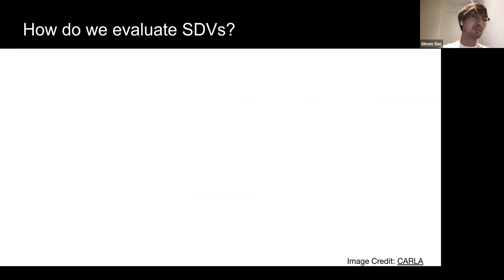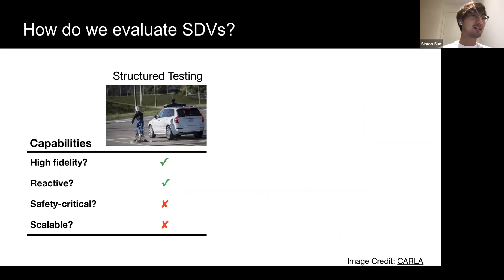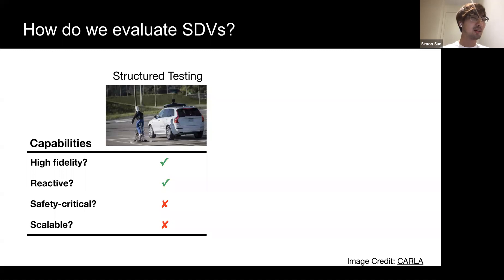The self-driving industry has used a combination of three different approaches to evaluate self-driving vehicles. First, there's structured testing, which tests the SDV on a set of reproducible scenarios. This is typically done at a test track facility and is considered high-fidelity, since we can evaluate the full autonomy system and hardware of the car in the real world on a particular situation. We also consider this testing to be reactive—as the SDV perceives the scene and performs a maneuver, other agents in the real world can respond to its behavior and sensor observations are updated accordingly. However, structured testing has major limitations: it's difficult to test extreme or dangerous situations such as high-speed avoidance maneuvers, and large-scale testing is impractical and costly.